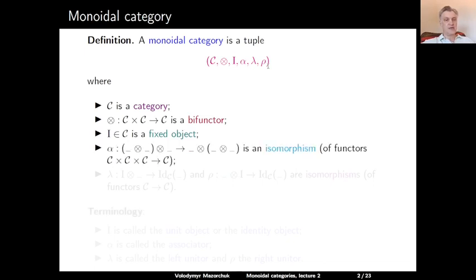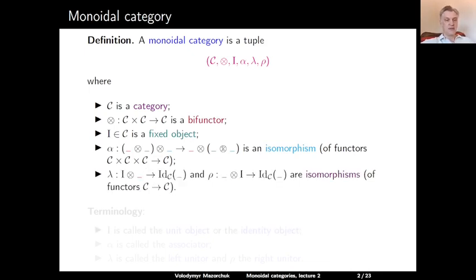Alpha is an isomorphic natural transformation from the composition of the tensor product with itself where the starting component is inserted on the left, to the composition of the tensor product with itself when the starting component is inserted on the right. So it is a natural transformation between two functors from C cross C cross C to C. Lambda is an isomorphic natural transformation from the functor given by tensoring with I on the left to the identity functor on C, and rho is an isomorphic natural transformation from the functor given by tensoring with I on the right to the identity functor on C. These are natural transformations between endofunctors of C.